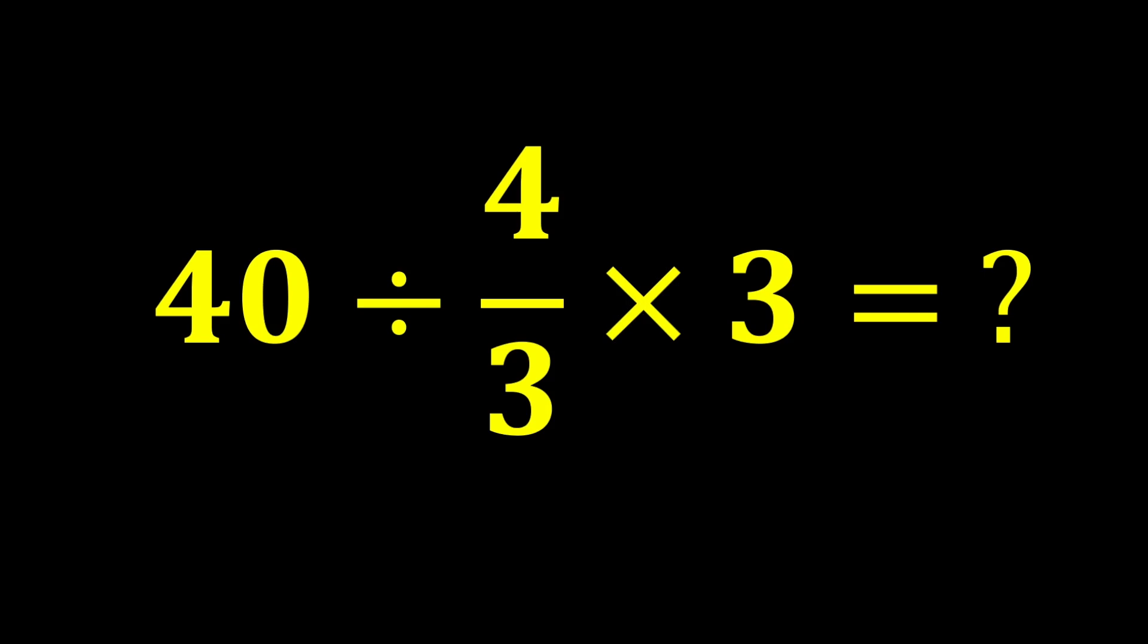40 divided by 4 over 3 multiplied by 3. First, we do this multiplication, 4 over 3 multiplied by 3. The 3's cancel each other out, and only 4 remains.